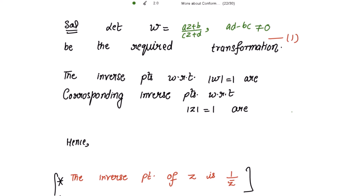The inverse points with respect to |w| = 1 are 0 and infinity. The corresponding inverse points with respect to |z| = 1 are: when w = 0, z = -b/a; and when w = infinity, z = -d/c. So these are the two inverse points with respect to the circle |z| = 1.